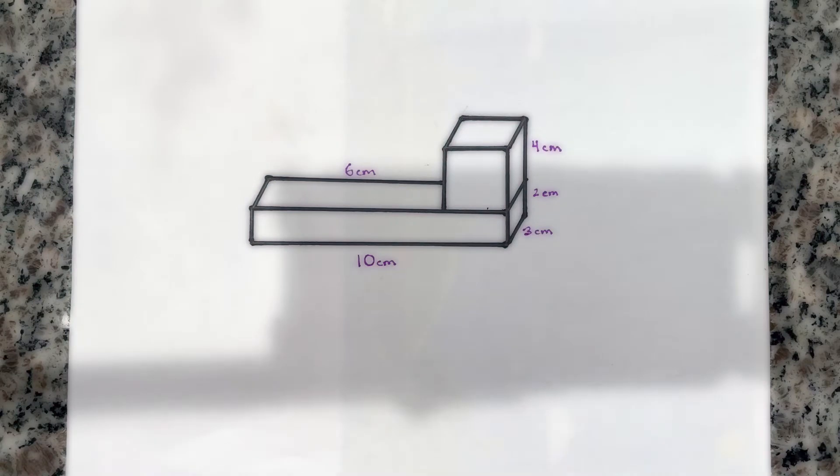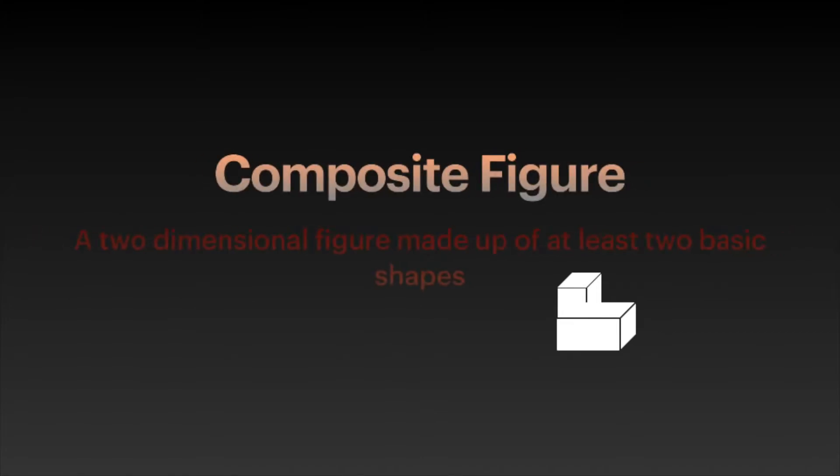First and foremost, let's go over what a composite figure is. What is a rectangular composite figure? What does it all mean? A composite figure is just a shape made up of two different shapes to compose a figure.